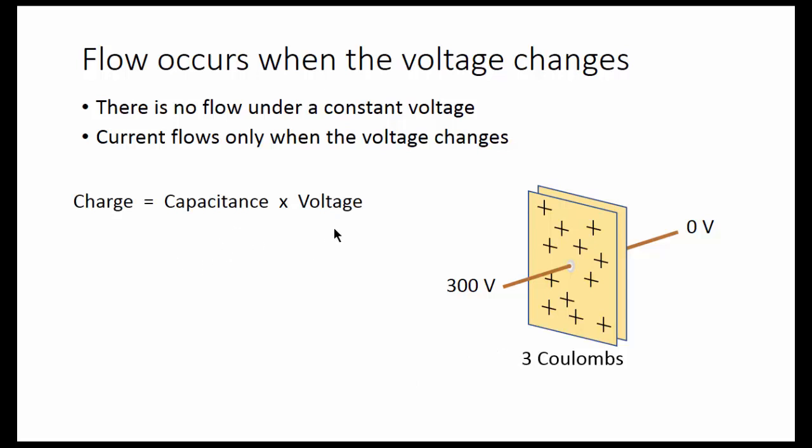Charge equals capacitance times voltage. That means the change in charge equals capacitance times the change in voltage. The change in charge is the current. In this notation, dv/dt means change in voltage with change in time.